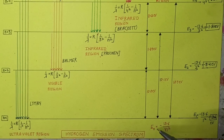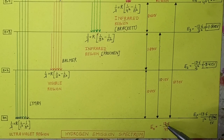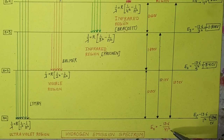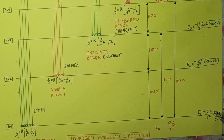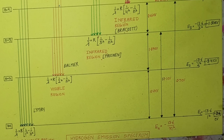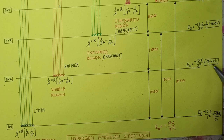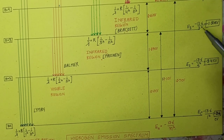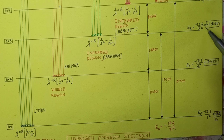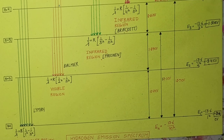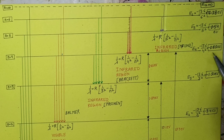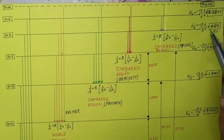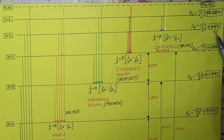The energy of the nth orbit is En equals minus 13.6 upon n square electron volts, since Z equals 1 for hydrogen. The first energy level is minus 13.6 eV, the second is minus 3.4 eV, the third is minus 1.51 eV, the fourth is minus 0.85 eV, and the fifth is minus 0.54 eV.